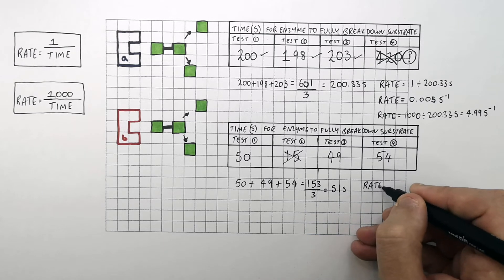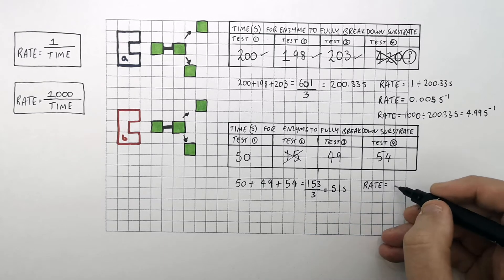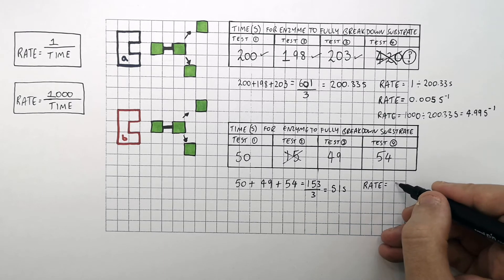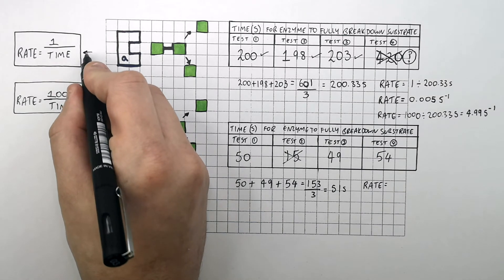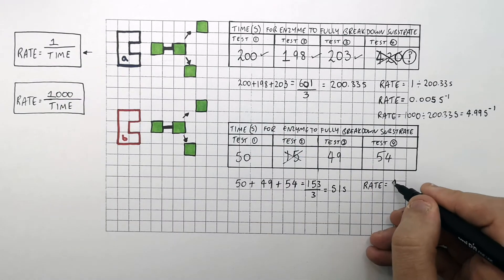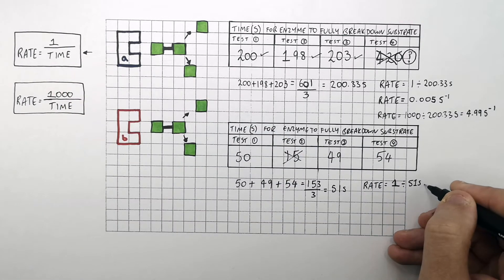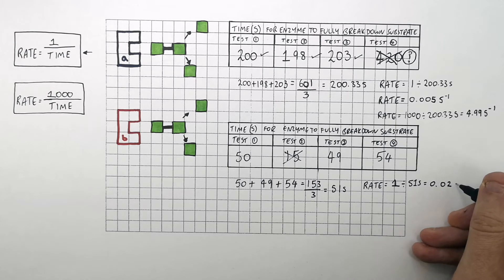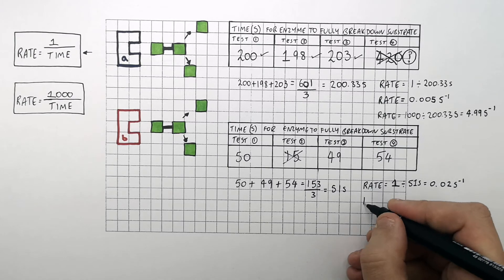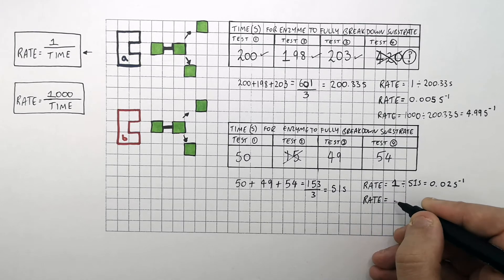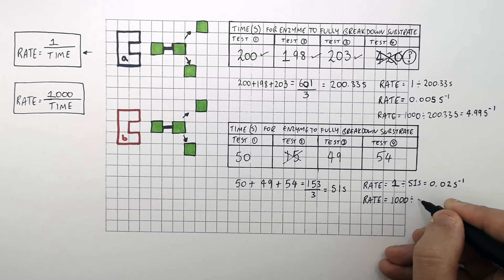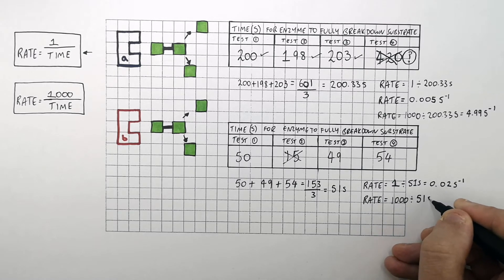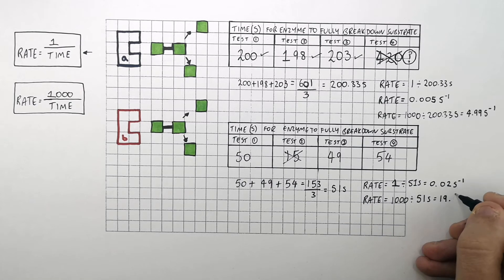To calculate the rate of this enzyme-controlled reaction, rate equals 1 divided by time. So that's 1 divided by 51 seconds, which equals 0.025 seconds to the minus 1. Or using rate equals 1,000 divided by time: 1,000 divided by 51 seconds equals 19.6 seconds to the minus 1.